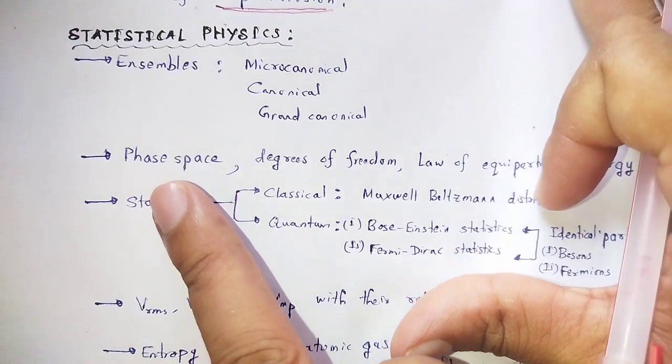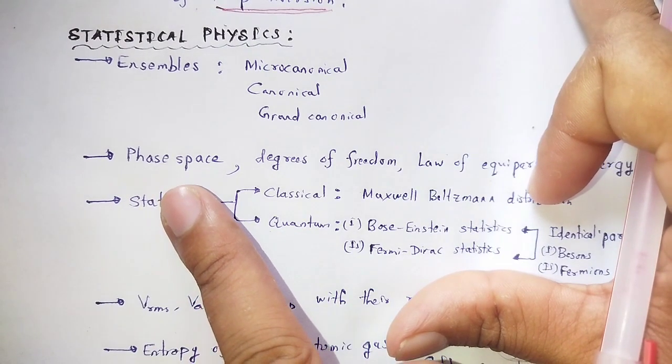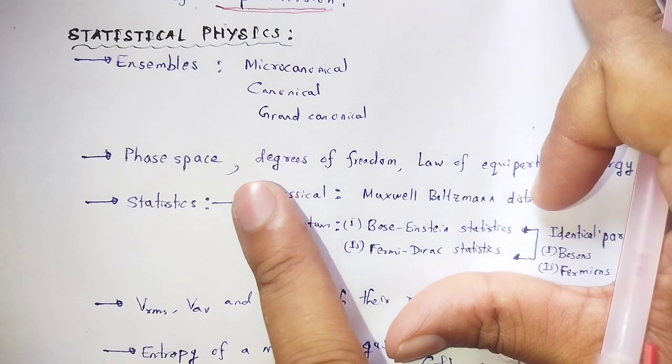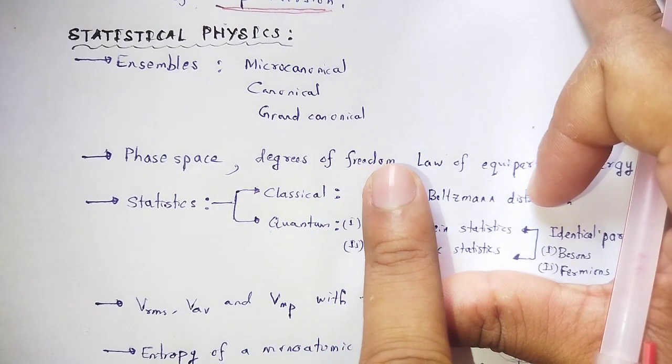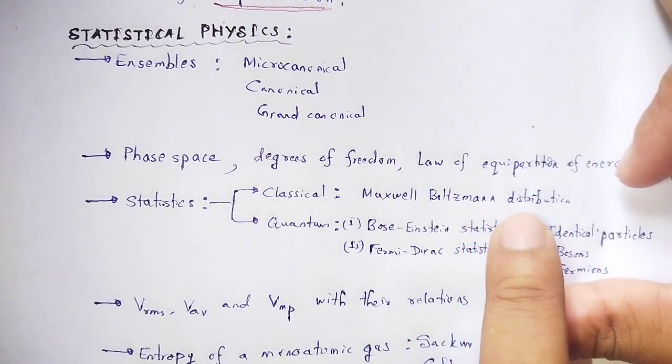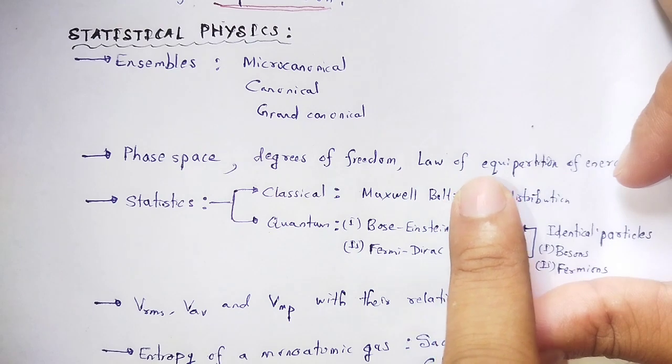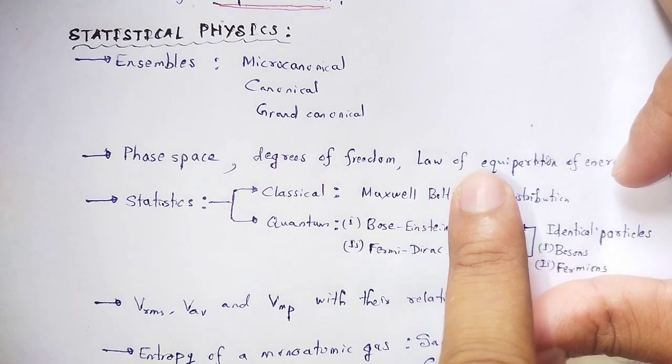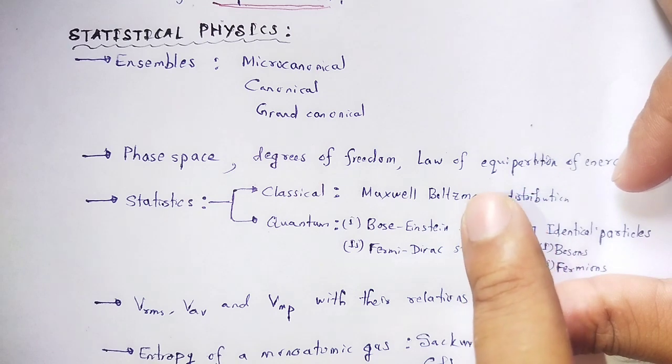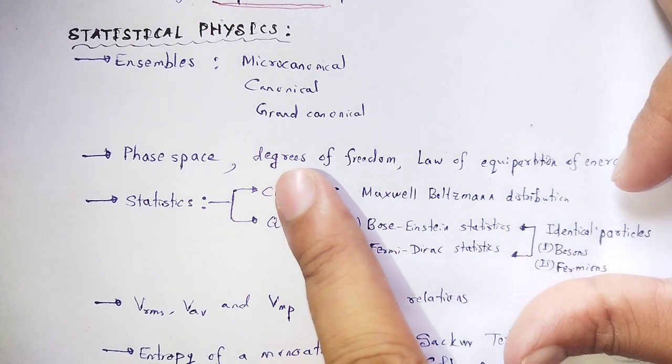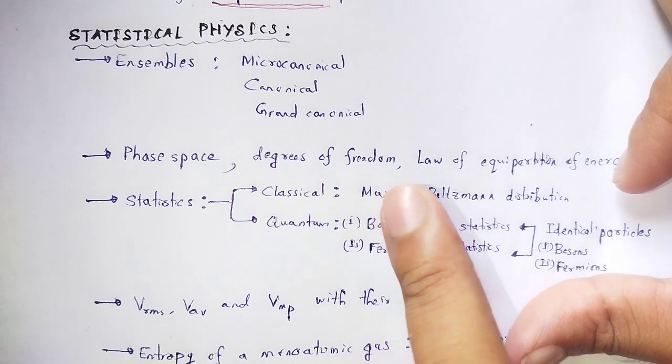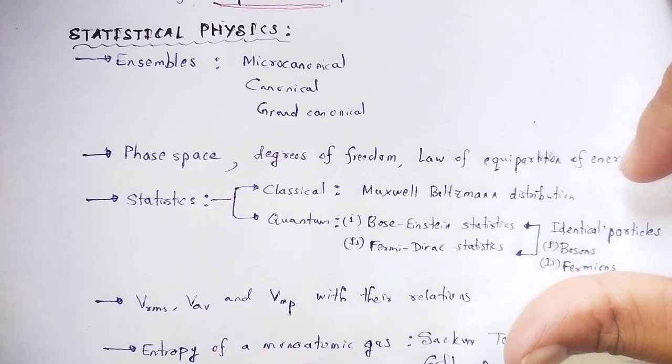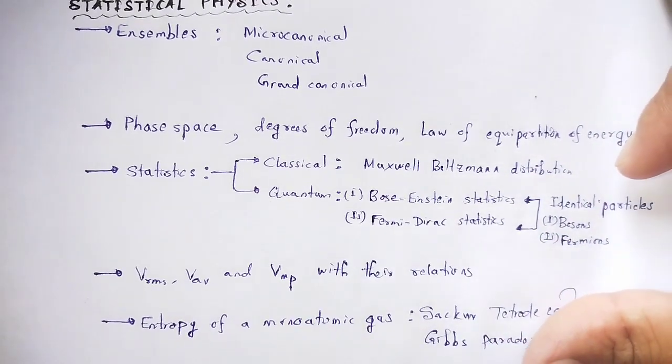Next, what is phase space? A six-dimensional system with position and momentum, and the degrees of freedom as well as the law of equipartition of energy.